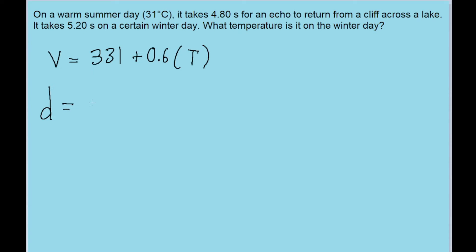The distance that sound travels equals the speed of the wave multiplied by the time it takes to travel that far. So V·t is the same for both the summer day and the winter day. Another way to write this is V₁·t₁ = V₂·t₂.